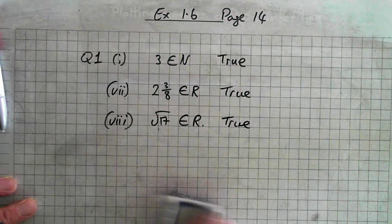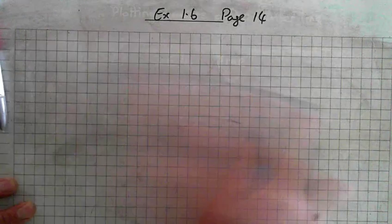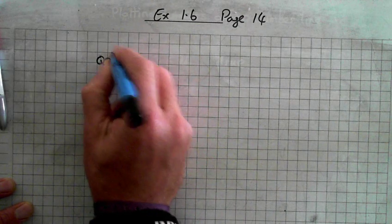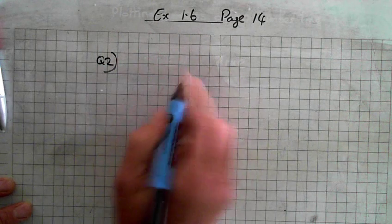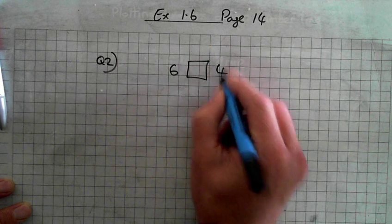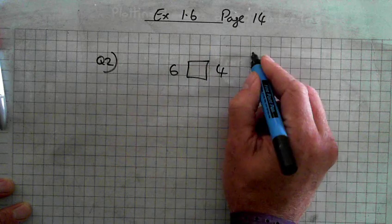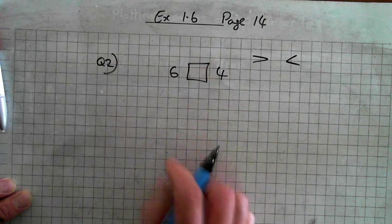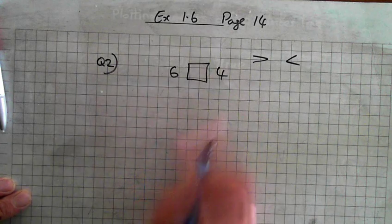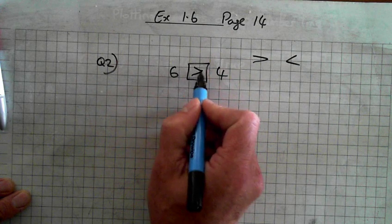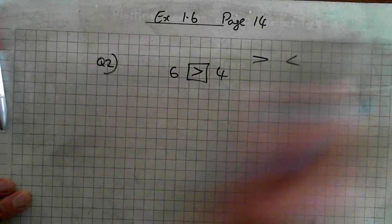Okay, that's question 1. Question 2, we'll just do part 1. You have to put a greater than or less than symbol in the box. So what fits in there? 6 is greater — this is the greater than side, this is the less than side. Alright, that's question 2.